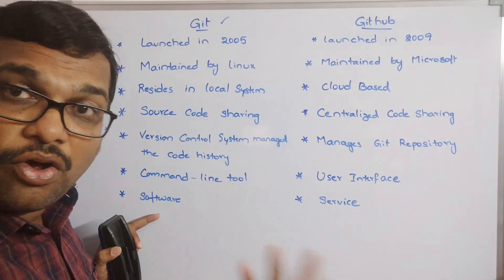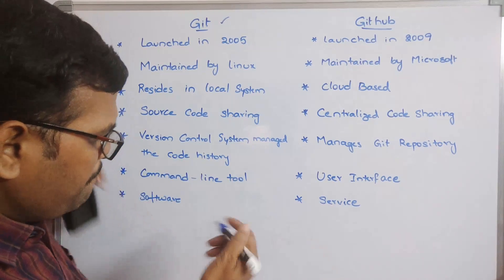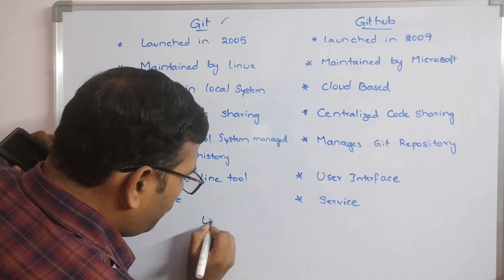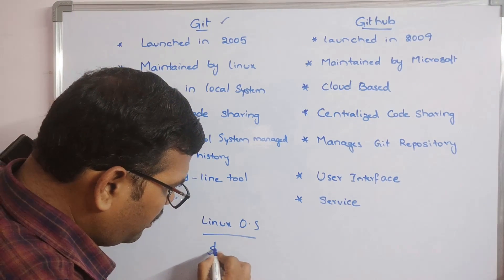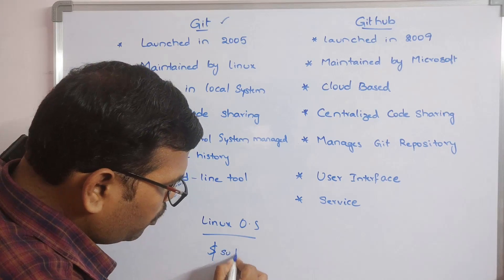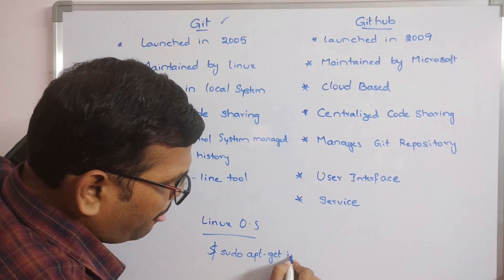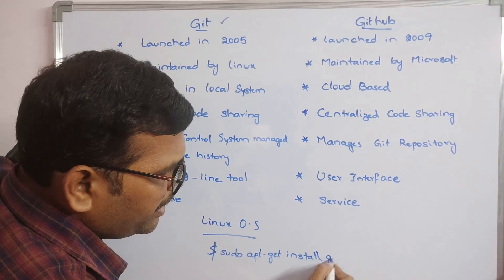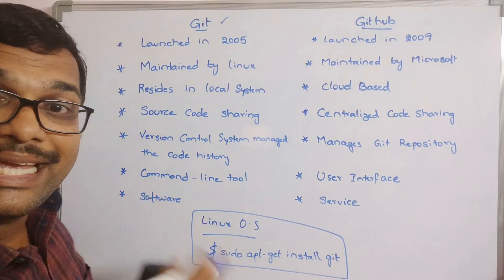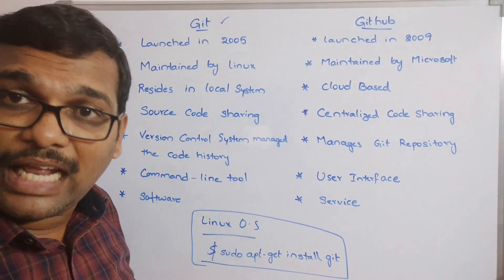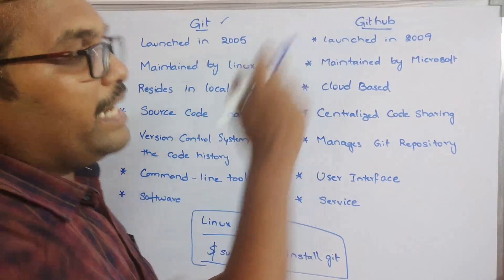We are supposed to install Git. In our previous session we saw how to install Git on Windows. Similarly, on Linux, installation of Git is done with the help of a command via the terminal, and that will install Git in the Linux environment.